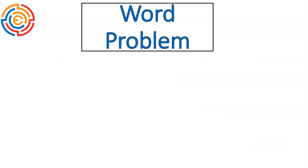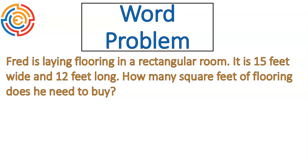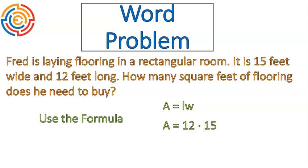The last type is the word problem. Fred is laying flooring in a rectangular room. It's 15 feet wide and 12 feet long. How many square feet of flooring does he need to buy? We know we're looking at a rectangle and trying to calculate the area — that's how many square feet of flooring will cover the entire surface. So we are going to use the formula of length times width. When we multiply 12 times 15, we get 180 square feet as our answer. Fred will need at least 180 square feet to cover that room. If there's cutoff, he might need to buy an extra box.